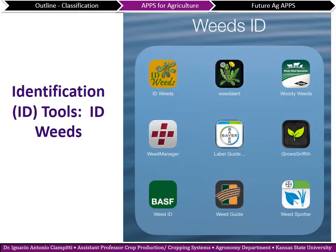Going to the first classification — ID tools — here's a print screen from my tablet showing more than 10 different apps in the Weeds ID section. I'm showing nine here. The main ones I'll highlight are ID Weeds from the University of Missouri and WeedAlert.com. These apps are very similar, so there may be a personal preference component to which one you feel more comfortable with.